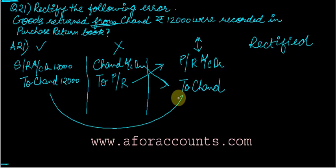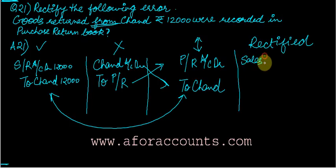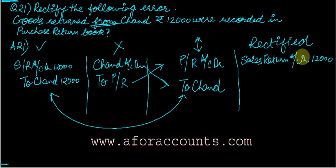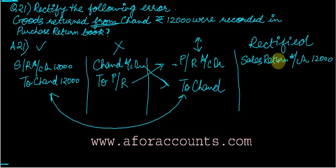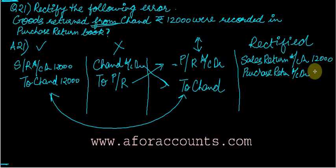Now compare the two entries. For Sales Return Account debit in the rectified portion — there is nothing to cancel on the debit side. Checking Purchase Return Account debit — nothing to cancel there either. So I will write: Purchase Return Account debit, 12,000.